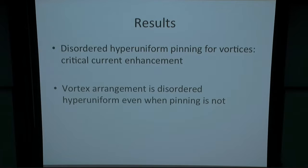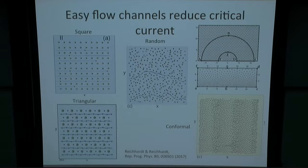Let me give you my talk in a single slide, and then I'll go back and give you some details. I have two central results. First is that if you introduce disordered hyperuniform pinning for vortices, you get an enhancement of the critical current. And the second result is that the vortices themselves actually show a disordered hyperuniform arrangement, regardless of what kind of pinning we have. This is something that's probably been true for a long time, but nobody realized it before. That's the one-minute version, but now let me give you the 20-minute version and fill in the details.